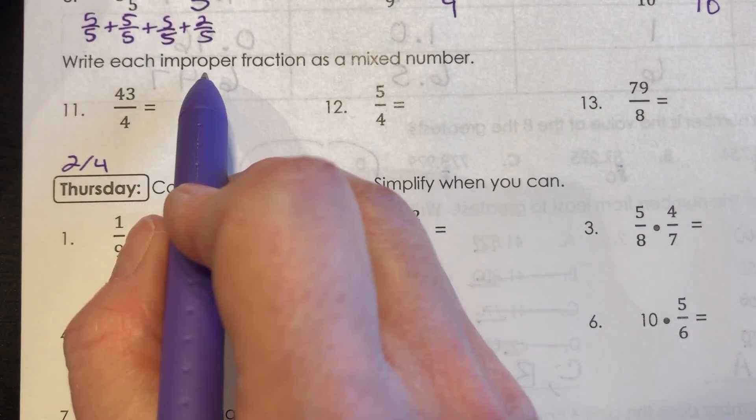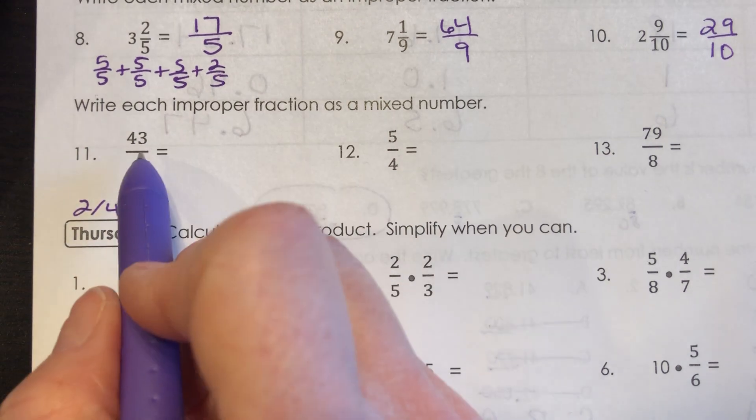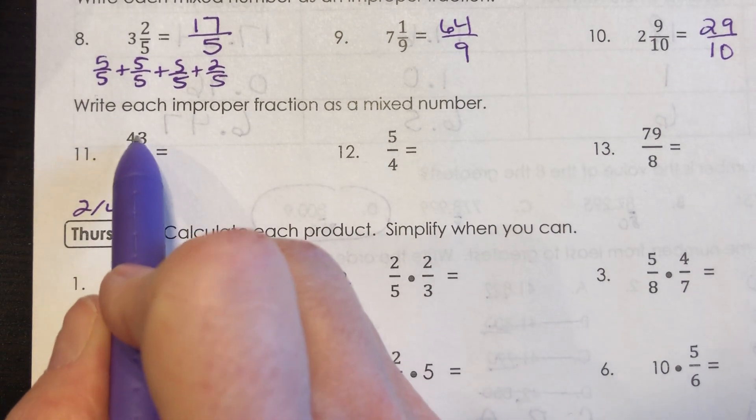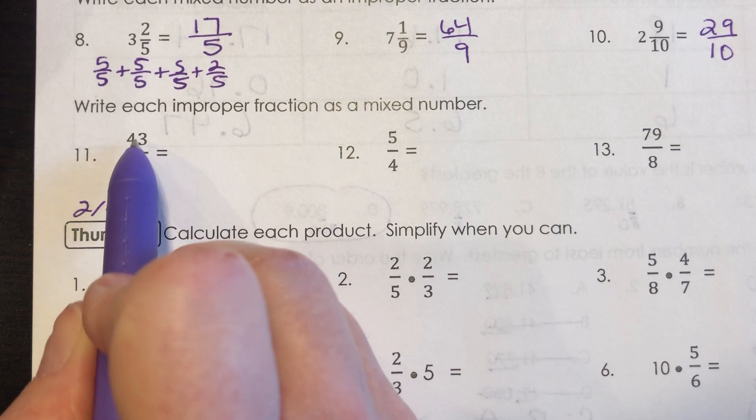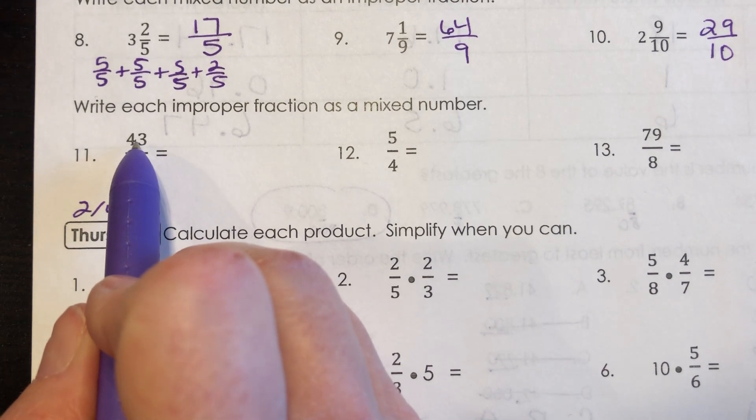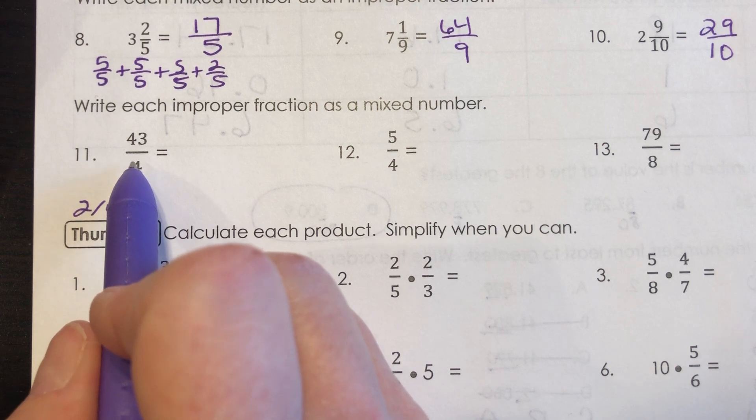Okay. Now we're going to do the opposite and you're supposed to write each improper fraction as a mixed number. So I'm basically going to try to figure out, well, how many 4 fourths are there in 43. And we can just look at that as how many whole amounts can I fit in there? So I can do 43 divided by 4. I know that 4 times 10 is 40.